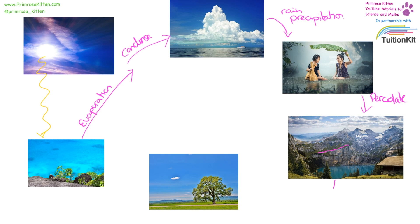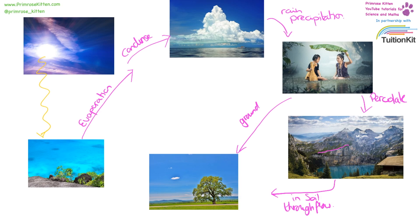Some of it's going to go into the soil, moving slowly back towards a river or a lake as through flow. Some of the water will go straight onto the ground. If the rock or the mud is already saturated, if it is full of water or the rock is impermeable, then that will just run off into the nearest river or stream or lake or reservoir.